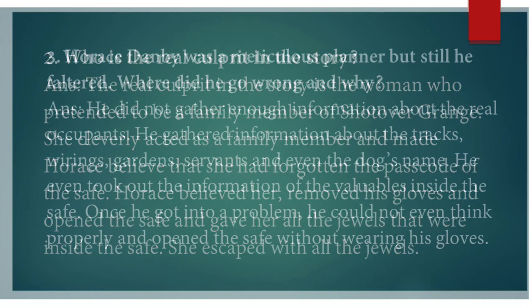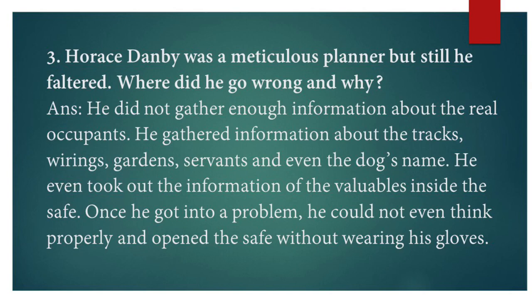Question number three: Horace Danby was a meticulous planner but still he faltered. Where did he go wrong and why? He did not gather enough information about the real occupants. He gathered information about the tracks, wirings, gardens, servants and even the dog's name. He even took out the information about the valuables inside the safe. But once he got into a problem, he could not think properly and opened the safe without wearing his gloves.